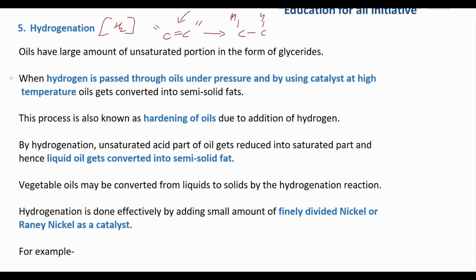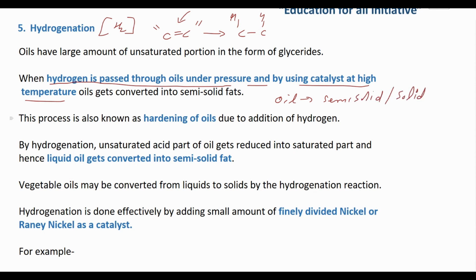Hydrogen is passed through oil under pressure using a catalyst at high temperature. The oil gets converted to either a semi-solid or a solid fat. Therefore, hydrogenation is also known as hardening of oil.